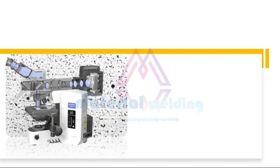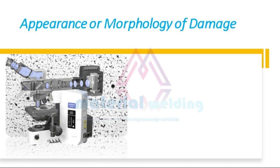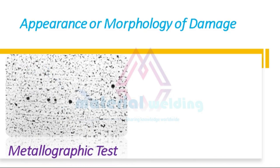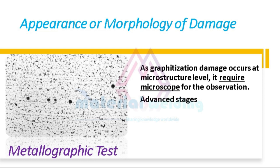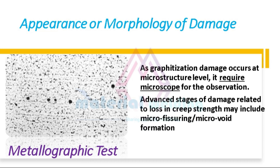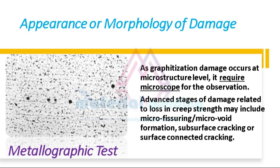Let's look at the appearance or morphology of the damage. As graphitization damage occurs at the microstructure level, it requires a microscope for observation. Advanced stages of damage related to loss in creep strength may include micro-void formation, sub-surface cracking, or surface-connected cracking.